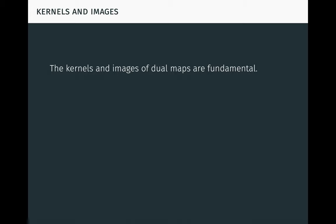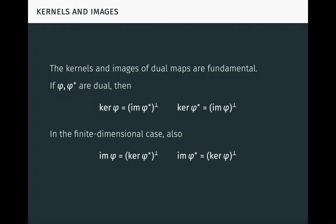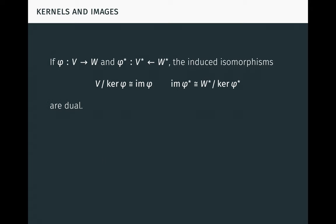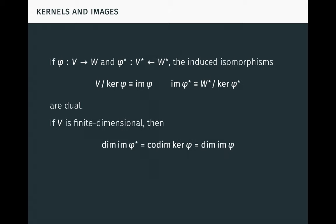The kernels and images of dual maps are fundamental. If phi and phi-star are dual, then it's easy to see that the kernel of phi is the complement of the image of phi-star, and by symmetry, the kernel of phi-star is the complement of the image of phi. In the finite-dimensional case, we can take complements of both sides of these equations to obtain that the image of phi is the complement of the kernel of phi-star, and the image of phi-star is the complement of the kernel of phi. These equations have many important applications, but we will look at just a few. First, if phi maps from V to W and the dual map phi-star maps to V-star from W-star, then the induced isomorphisms from V mod the kernel of phi to the image of phi, and to the image of phi-star from W-star mod the kernel of phi-star, are dual. Second, if V is finite-dimensional, the dimension of the image of phi-star is just the codimension of the kernel of phi, which is just the dimension of the image of phi by the rank-nullity theorem. Therefore, the rank of phi-star equals the rank of phi.